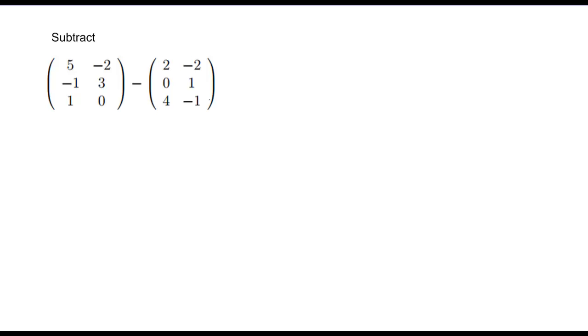Now if I want to subtract, kind of the same as addition, except I subtract each corresponding element. So once again, I'll have 5 minus 2, negative 1 minus 0, 1 minus 4, negative 2 minus negative 2, 3 minus 1, 0 minus negative 1. And I combine those, I get 3, negative 1, negative 3, 0, 2, and 1.